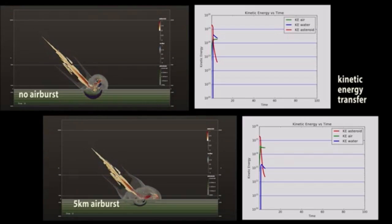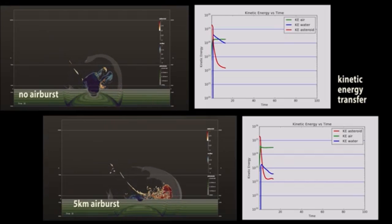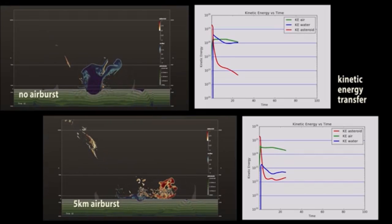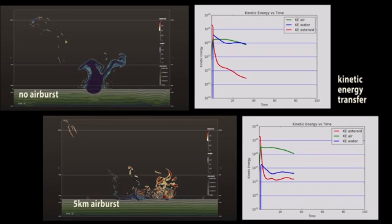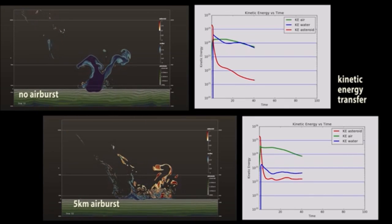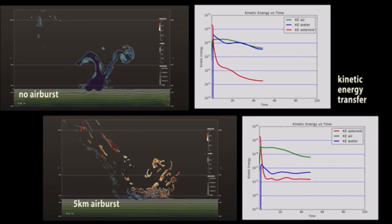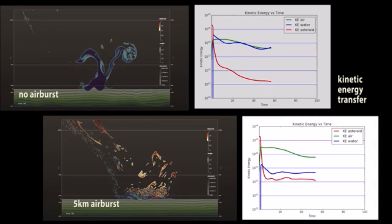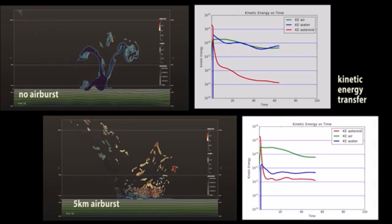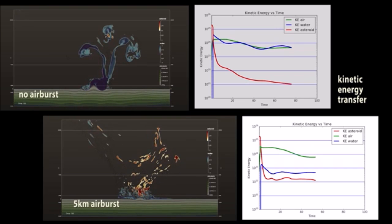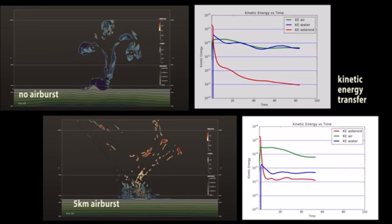Here we see the difference in energy transfer with and without an airburst. Whether or not there is an airburst changes how much kinetic energy is transferred to the air and water. An airburst breaks the asteroid apart, so that much of it skims the surface of the water, rather than slamming into it. For the same size of asteroid, this results in a much smaller effect on the ocean.